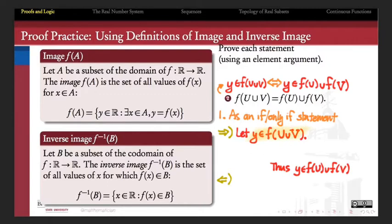If Y belongs to F of U union V, then, using this definition, what does that tell us? Yeah. So it tells us that, replacing the A's in my definition with U union V, it tells us that Y is equal to F of X for some X that belongs to U union V. That's what it means to belong to the union. It means it's the image, it's F of some element of U union V.